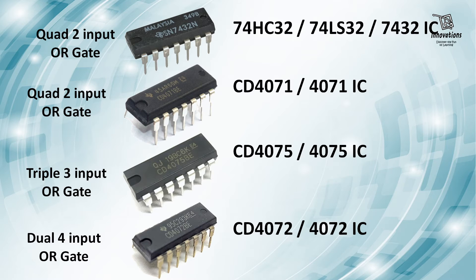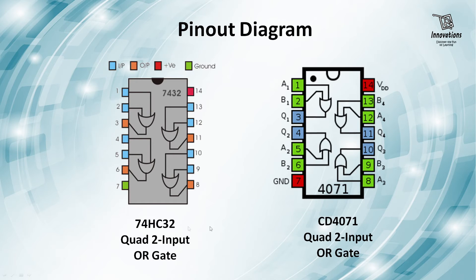In our presentation we will look at two ICs. The first is 74HC32, a quad two-input OR gate — you can see in the schematic there are four OR gates each with two inputs. The other is CD4071, which has a slightly different schematic but also contains four OR gates each with two inputs.